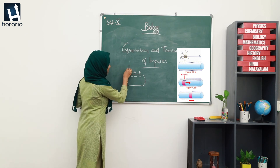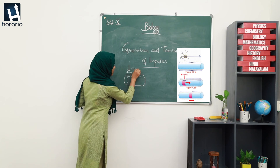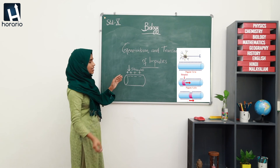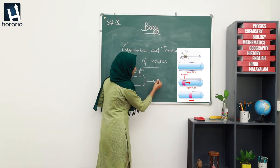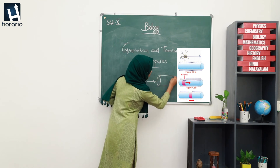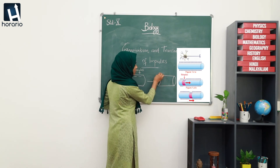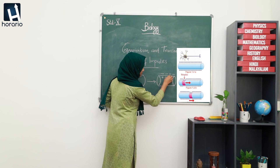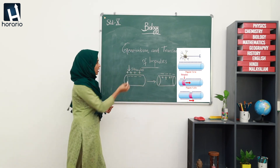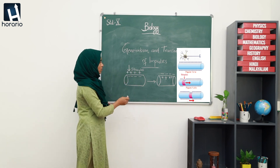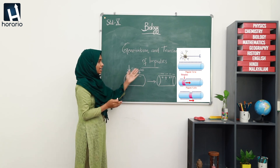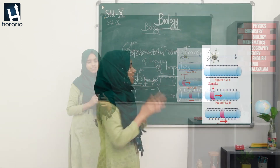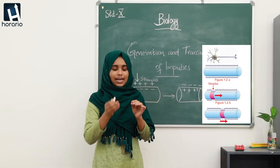This electrical equilibrium will be disturbed due to a specific stimulus. Whenever a stimulus acts here, the electrical configuration of the ions will change — the positive charge on the outer side will become negatively charged, and the inner side will become positively charged. This change is due to the action of the stimulus on the axon, causing a change in the electronic configuration of certain ions.